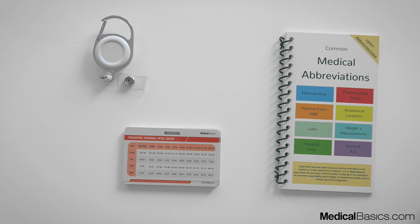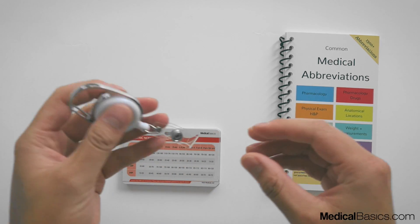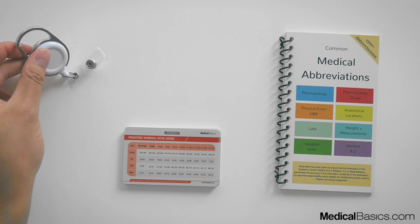In this video I'm going to be walking through some of the cards in one of our products called Scrub Notes, which are essentially just reference cards that you can attach to the back of one of these little ID badge reels.